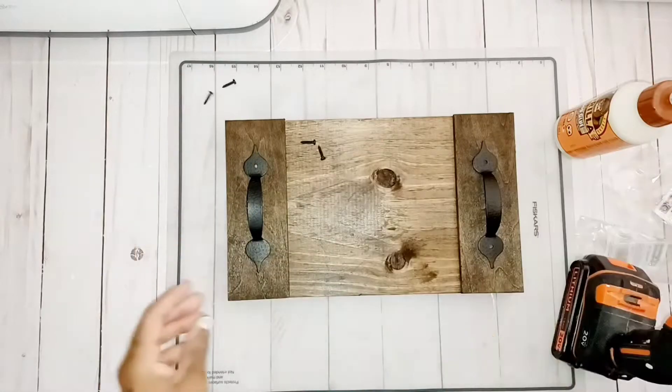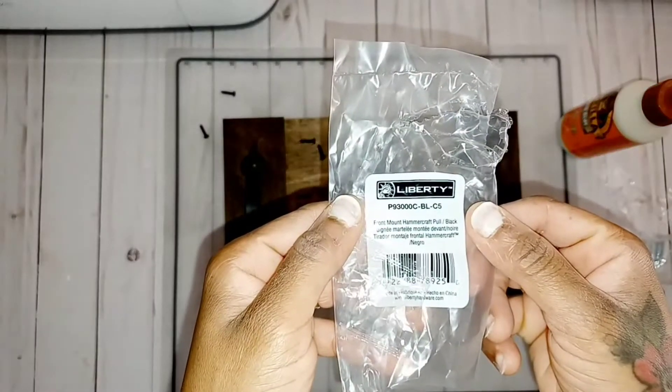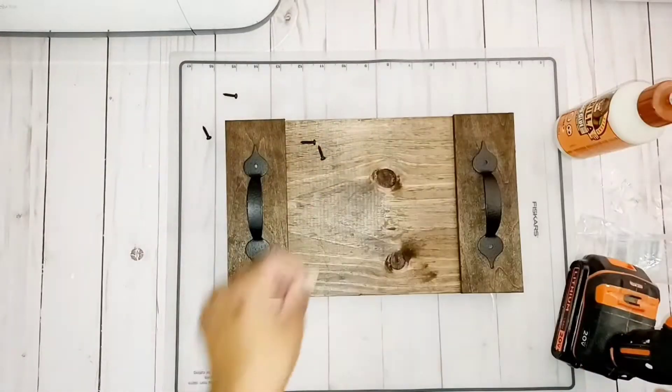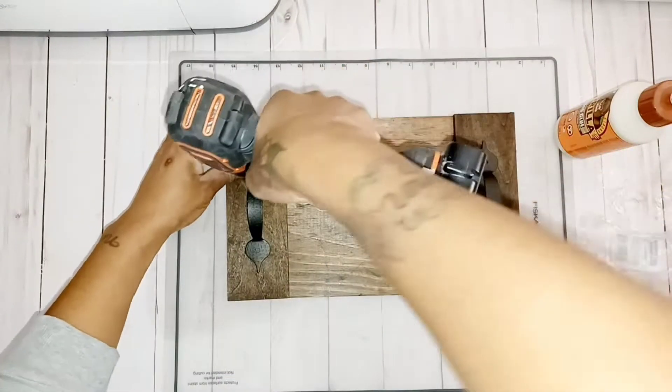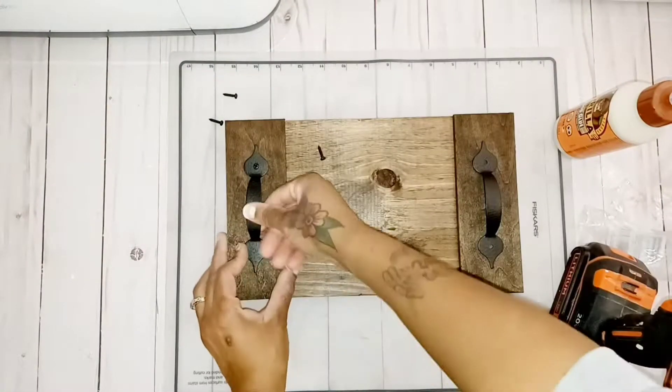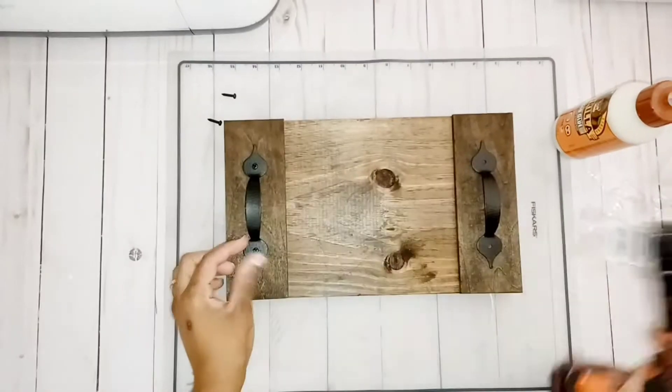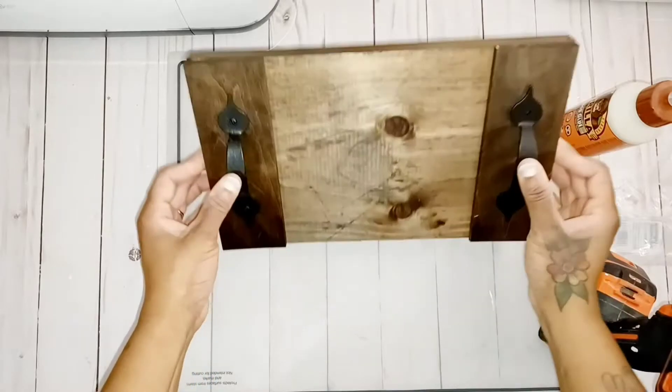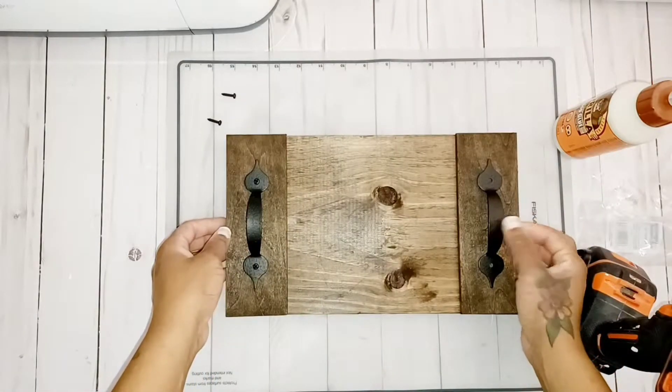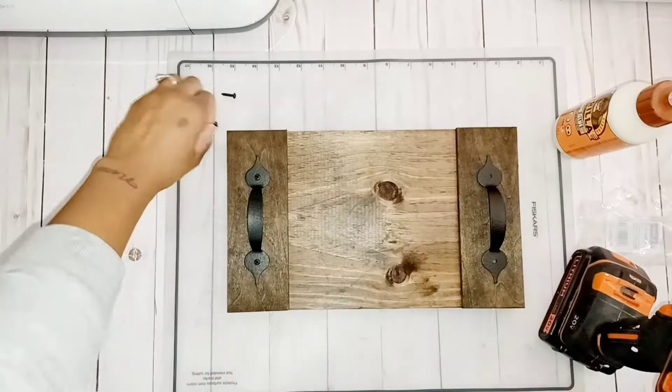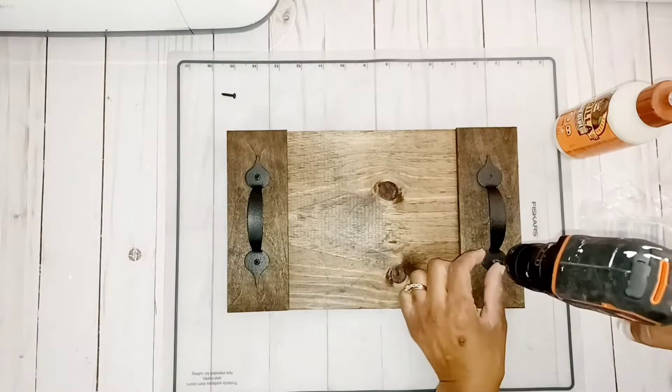So the little handles I get from Lowe's, I try to grab them every time I go. They're like a dollar and some change and they're good to use when you want to do little crafts. I also like the style of them. Once I place the handles down, next I'm going to go ahead and start placing down all of my vinyl.